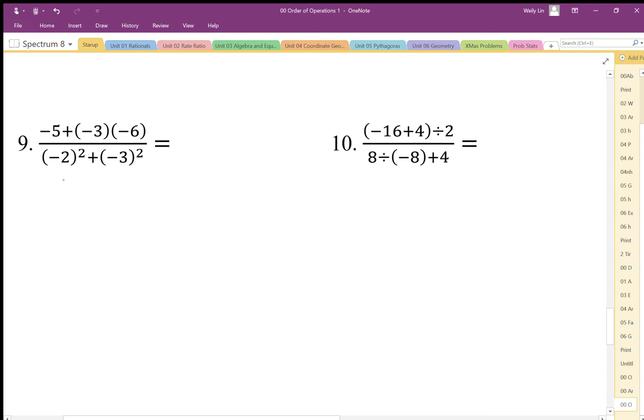We're going to do the numerator and denominator separately because it's implied that the numerator is in big brackets and the denominator is in big brackets. So negative 5 times negative 3 times negative 6, negative times negative is positive, so we get plus 18 on top.